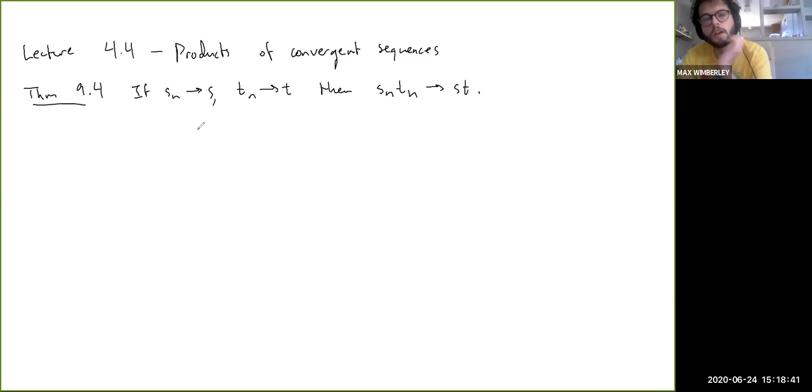Now, the question is, before we were looking at sums. We were adding two convergent sequences, and we were asking the question, if we know something about the error between Sn and S and the error between Tn and T, what do we know about the error between Sn plus Tn and S plus T? So we want to ask a similar question.